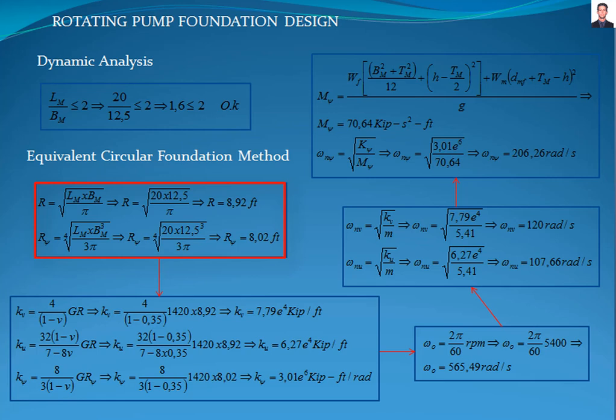The next step is to calculate the spring stiffness constant according to the Richard and Wittman methods, with equations 5.4.1.1 I, J and K of the American Concrete Institute 351.3R standard for vertical, horizontal and rocking cases respectively. Where nu is the Poisson's ratio and G is the shear modulus of the soil obtained from the soil analysis report, giving results of 7.79 times 10^4 kilopounds per foot, 6.27 times 10^4 kilopounds per foot, and 3.01 times 10^6 kilopounds-feet per radian respectively.